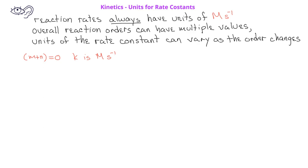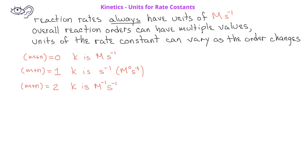However, if the overall reaction order is equal to 1, then the rate constant will have units of seconds to the minus 1 power — equivalently, molarity to the 0 power times seconds to the minus 1. If the overall reaction order is 2, then the rate constant will have units of molarity to the minus 1 times seconds to the minus 1. And if the overall reaction order is 3, then the rate constant has units of molarity to the minus 2 times seconds to the minus 1.